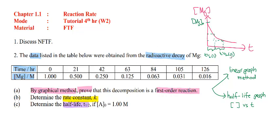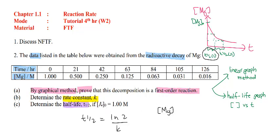From the half-life graph, use T-half = ln2 / K. Since you already have the T-half from the graph, you can find the value of K. For part C, if the initial concentration of magnesium is 1 molar — note there is a typing error: it should read magnesium, with [Mg]₀ = 1 molar — half of this value is the first T-half, so you can read it directly from the graph.